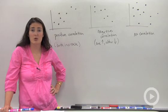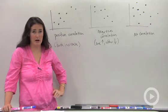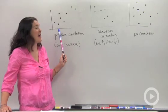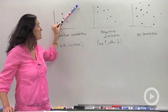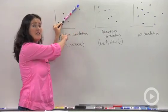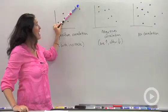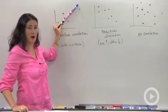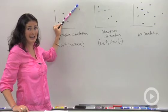Correlation describes the relationship between two variables. So in this first graph, we have what's called a positive correlation. Because as one variable gets bigger, the other variable also gets bigger. If you know about slopes, you might see that's a positive slope line. Easy.